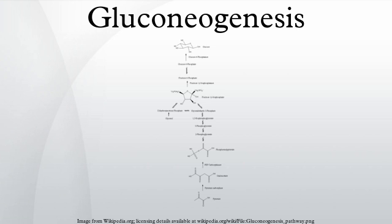In vertebrates, gluconeogenesis takes place mainly in the liver and, to a lesser extent, in the cortex of the kidneys. In ruminants, this tends to be a continuous process. In many other animals, the process occurs during periods of fasting, starvation, low-carbohydrate diets, or intense exercise.